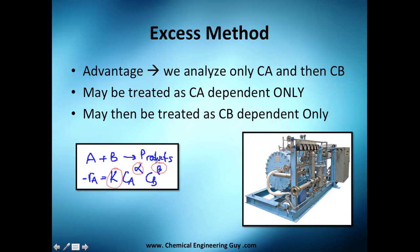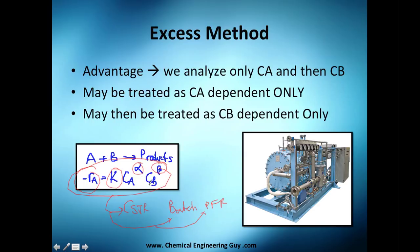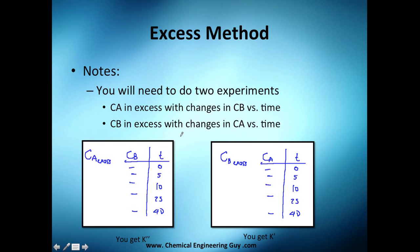At the end of the problem we have everything: the order α with respect to A, the order β with respect to B, and the rate constant k — giving us the complete rate of reaction. This rate law doesn't depend on reactor type, so once we have it we can apply it to a CSTR, a batch reactor, or a PFR. For example, gasoline and oxygen will react the same way regardless of the reactor vessel — the chemistry is the same.